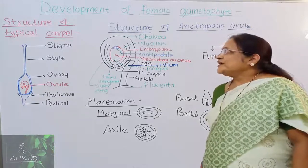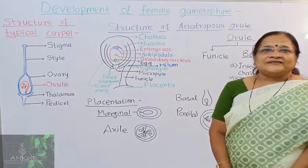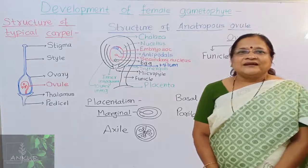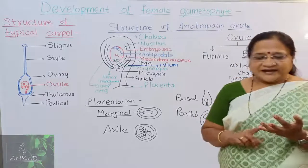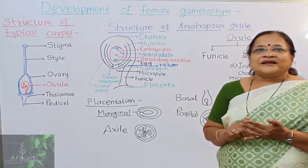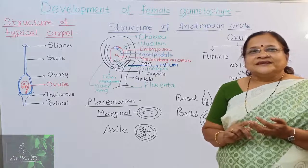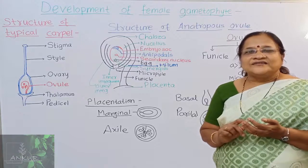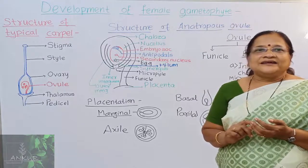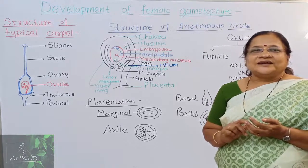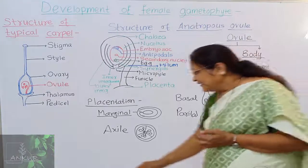In angiosperms we get the structure of sexual reproduction, that is the flower, which is conspicuous. In that flower you get four whorls: the calyx, corolla, androecium and gynoecium. Gynoecium is the innermost whorl of the flower, which is the female reproductive structure, and the smallest unit of that female reproductive structure is the carpel.